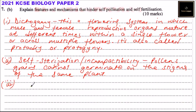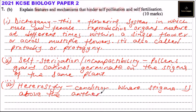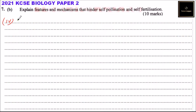Number three, we have heterostyly. This is a condition where the stigma is positioned above or below the anther. This also prevents self-pollination.